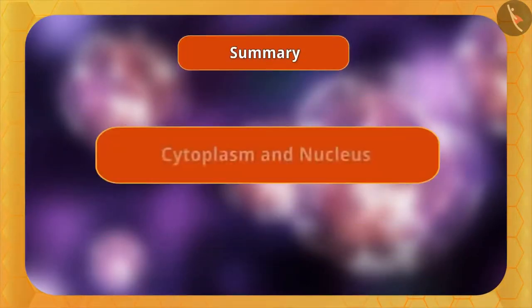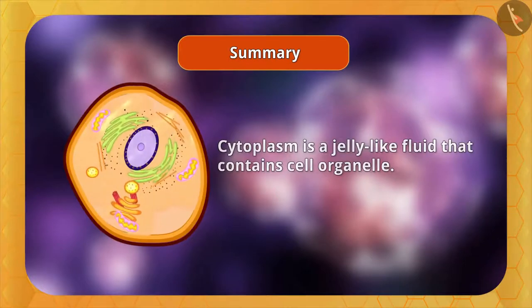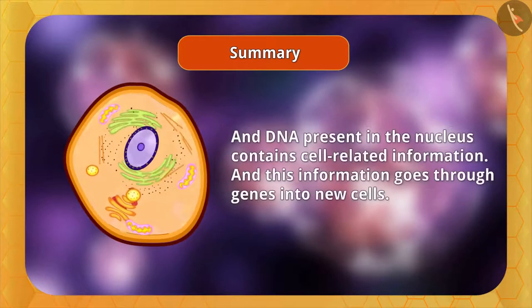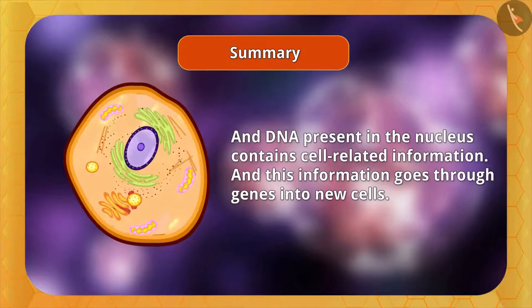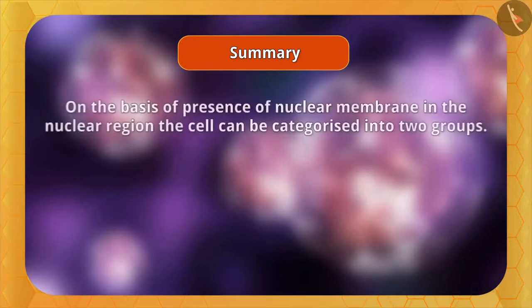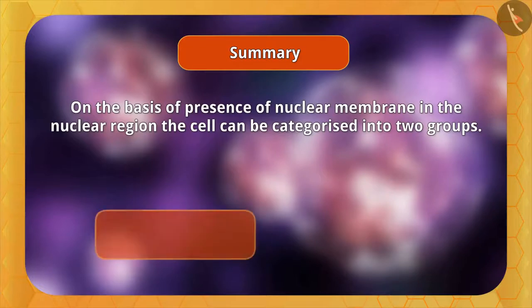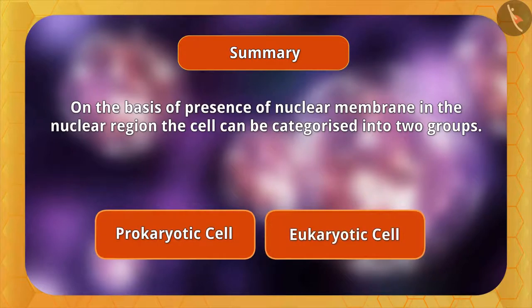Summary: We learned about cytoplasm and nucleus. Cytoplasm is a jelly-like fluid that contains cell organelles. DNA present in the nucleus contains cell-related information, and this information passes through genes into new cells. Based on the presence of a nuclear membrane, cells are categorized into two groups: prokaryotic cells and eukaryotic cells. Next, we will learn about cell organelles.